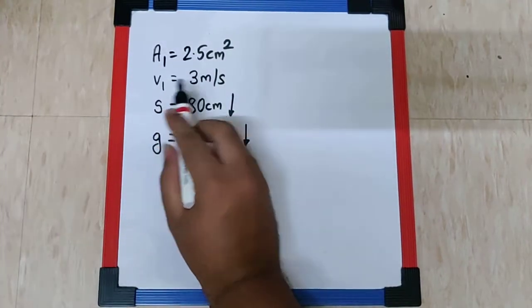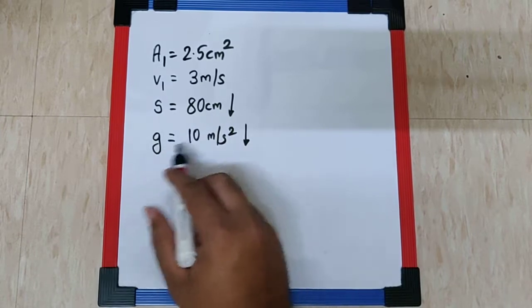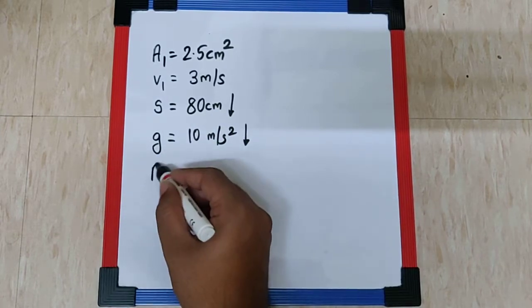So area A1 is given to you, V1 is given to you, the distance covered is given to you, the gravity is given to you, and they have asked us to find A2.